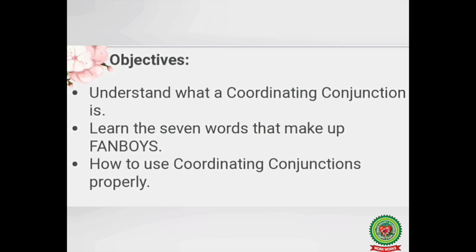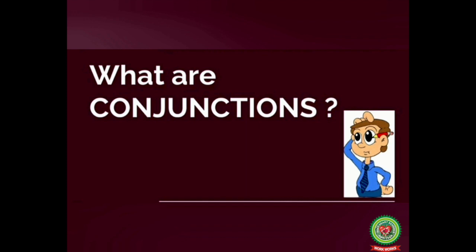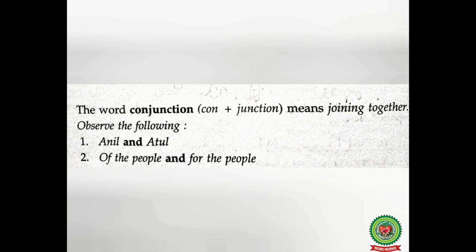Before beginning with today's topic, we'll have a quick review of what we have done in the previous video. Tell me, what are conjunctions? Conjunctions are joining words. Observe the following examples. Number one: Anil and Atul. Number two: of the people and for the people. In the first example, conjunction 'and' is joining two words — Anil and Atul. In the second example, conjunction 'and' is joining two phrases. So a conjunction is a word that joins together words, phrases, clauses, or sentences.